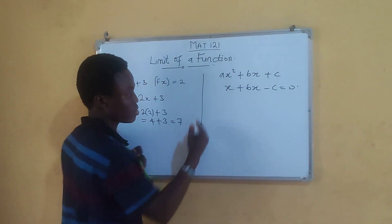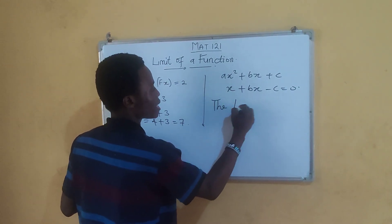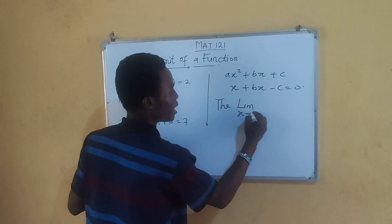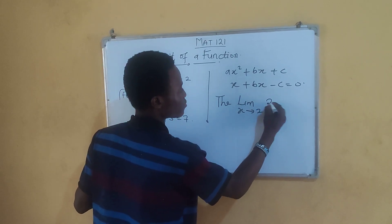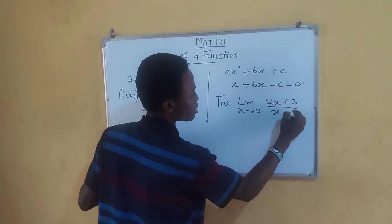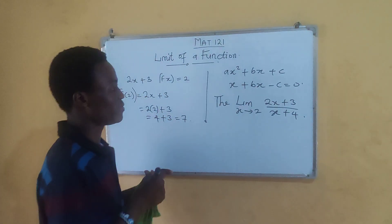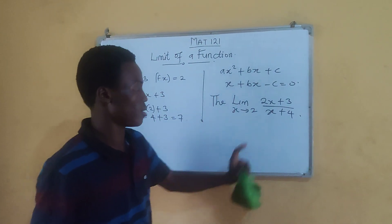For example now, let me just give us a simple example of limits. We can have the limit as x tends to 2, where we have 2x plus 3, divided by x plus 4. This is a divisional limit of such.